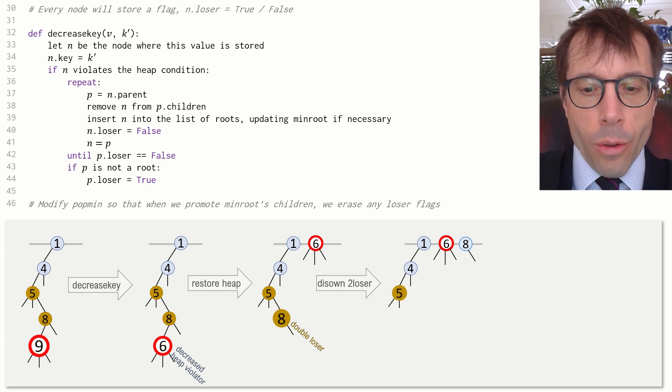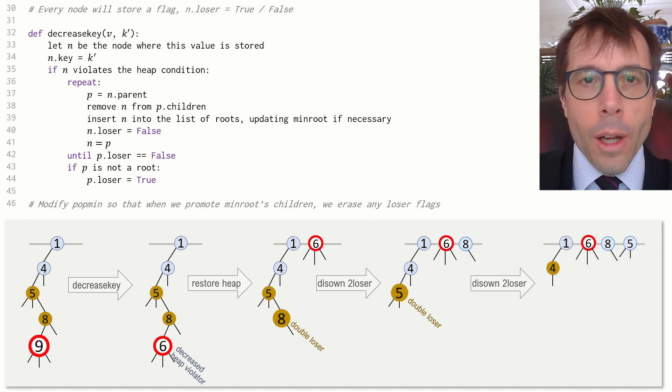But now the node 5 is a double loser, so it too gets disowned by its parent. And the parent node, the 4, gets marked as a loser.